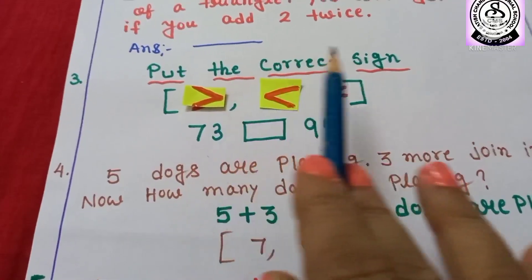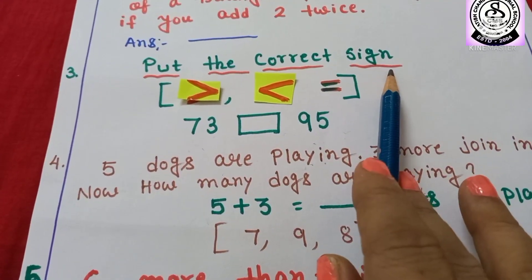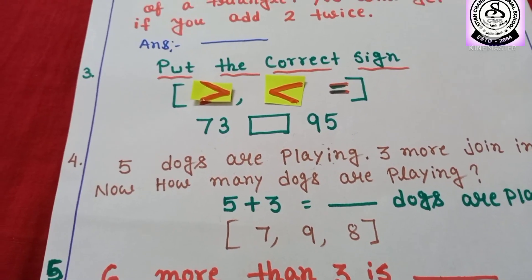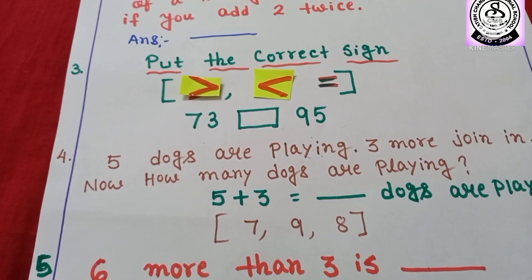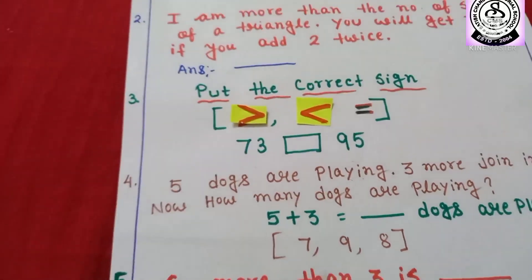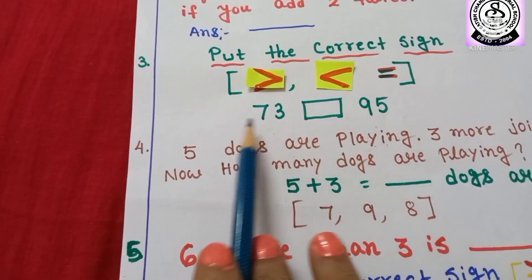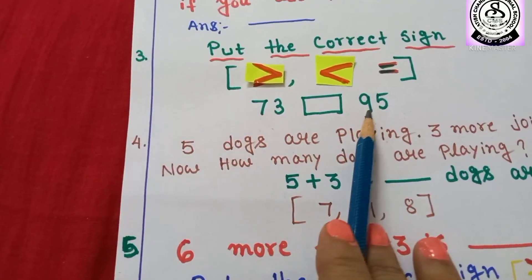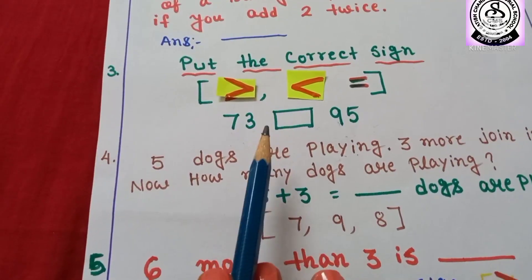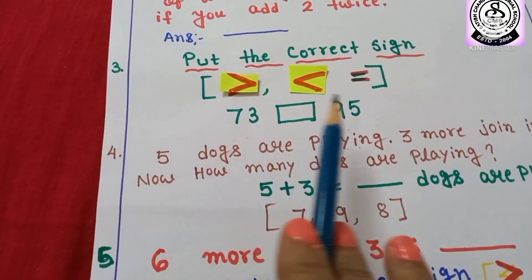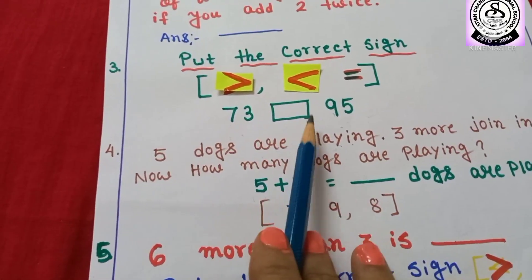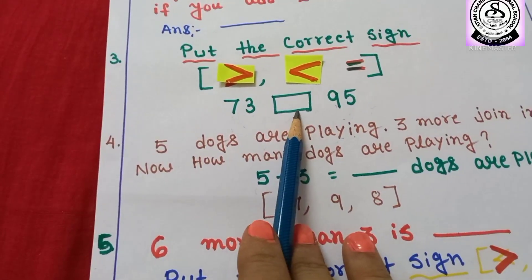Number 3: Put the correct sign. You know very well which one is the sign of greater than, which one is less than, and which one is equal to — I have already discussed this with you. Here I have given two numbers: 73 and 95, with a box. You have to identify whether 73 is greater than 95 or 95 is greater than 73, and put the correct sign.